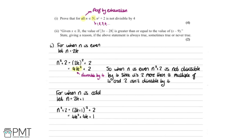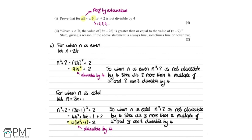Expanding, this gives 4k² + 4k + 1 + 2. We can factorize out 4, getting 4(k² + k) + 3. This is also not divisible by 4, because — as in the previous example — the term 4(k² + k) is divisible by 4, but we're adding 3 on top, which isn't divisible by 4. So overall this is not divisible by 4. When n is odd, n² + 2 is not divisible by 4, since it is 3 more than a multiple of 4, and 3 isn't divisible by 4.